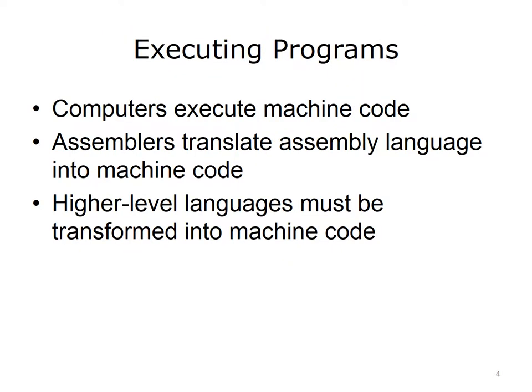This lecture will focus on the compiling and interpreting process for computer programs. Computers can execute only machine code, which are sequences of ones and zeros. Therefore, programs written in any language must be converted to machine code prior to execution. If a program is written in assembly language, which is a low-level language, an assembler is used to translate the assembly language code into machine code.